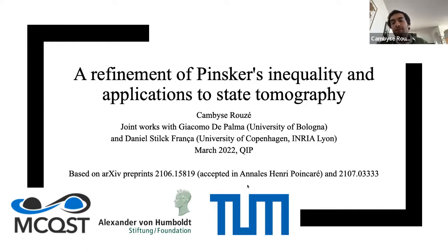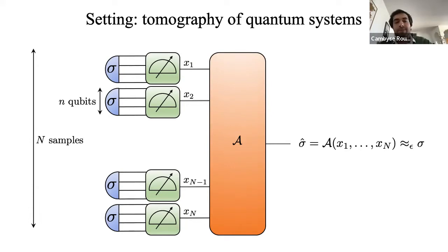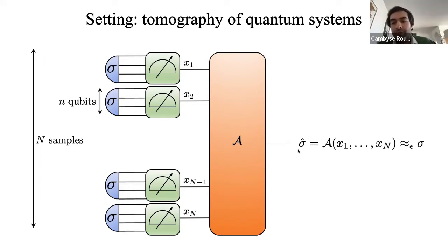The main topic concerns the tomography of a class of physically relevant quantum states. State tomography is the task of finding an efficient classical representation of a state σ. To do so, we are allowed to perform uncorrelated measurements on each separate copy of the state — we have N samples — and those measurements can be made on an arbitrary basis. We then post-process the outcomes using a classical algorithm and construct our estimator σ̂, which we want to approximate σ up to some ε.